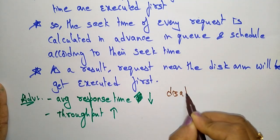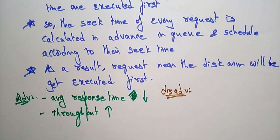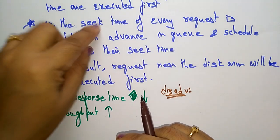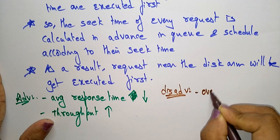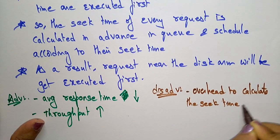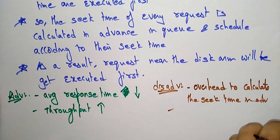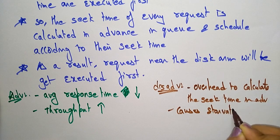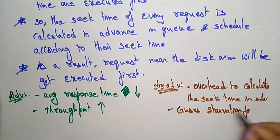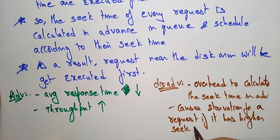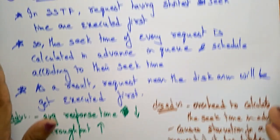The disadvantages of SSTF: there is overhead to calculate the seek time in advance, because for each track we have to calculate the seek time before scheduling. Also, there is a chance of starvation — requests with higher seek time have to wait for a long time, whether they may get a chance or not. This is called starvation.